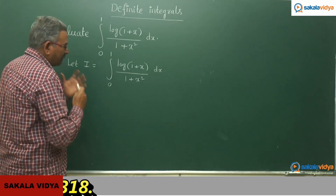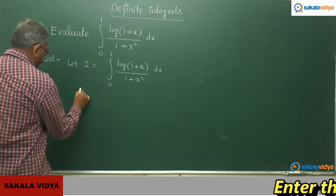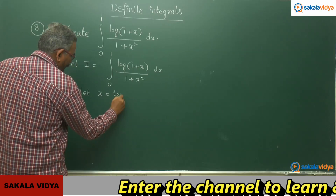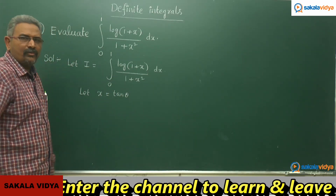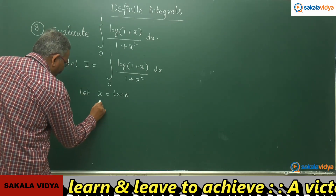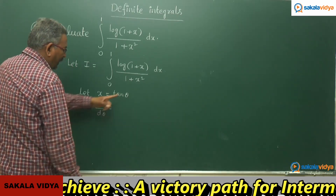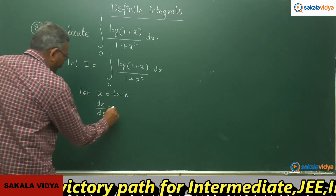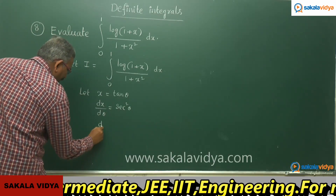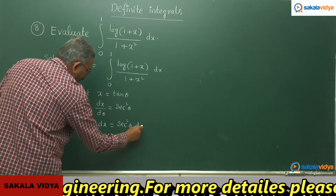Let us make a plan here. We substitute x = tan θ. Differentiating both sides with respect to θ, dx/dθ equals the differentiation of tan θ with respect to θ, which is sec²θ. So we have dx = sec²θ dθ.